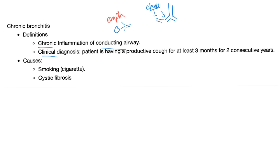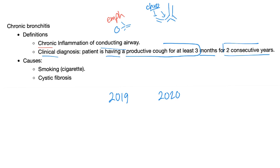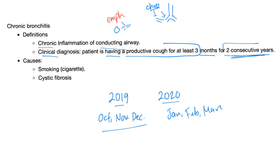It's a clinical diagnosis. The patient is having a productive cough for at least three months, for two consecutive years. For example, 2019 and 2020 — the patient has symptoms in both years. That's two consecutive years. For at least three months — October, November, December of 2019, and then January, February, March of 2020. Two conditions are met: at least three months, and two consecutive years.